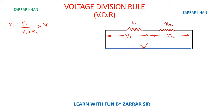In the similar way, if I need to calculate V2, it will be — what is the resistance across V2? It is R2. So I'll write R2 upon R1 plus R2, into the total voltage. This is a very simple way.